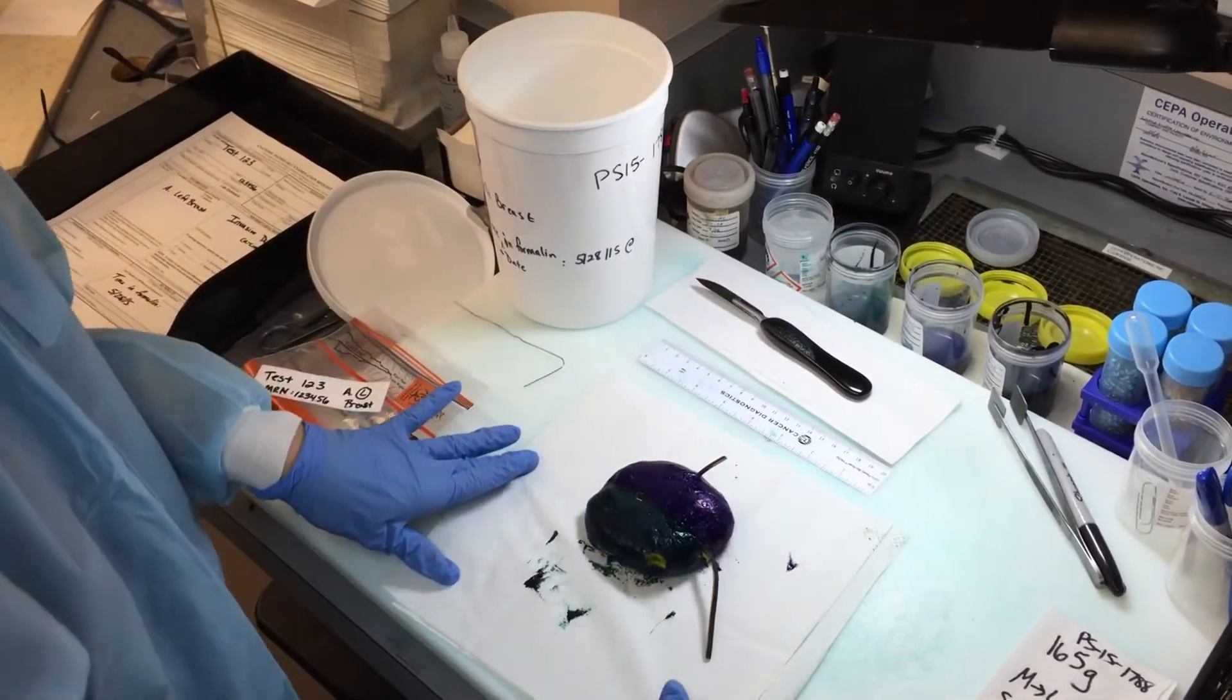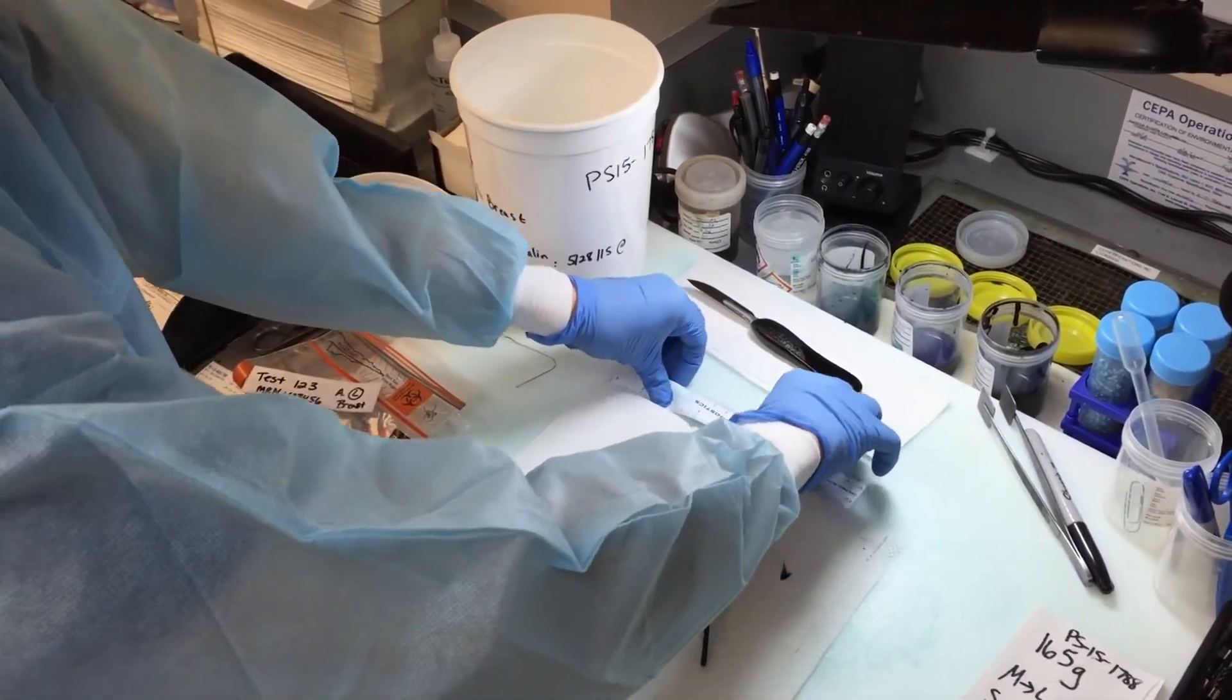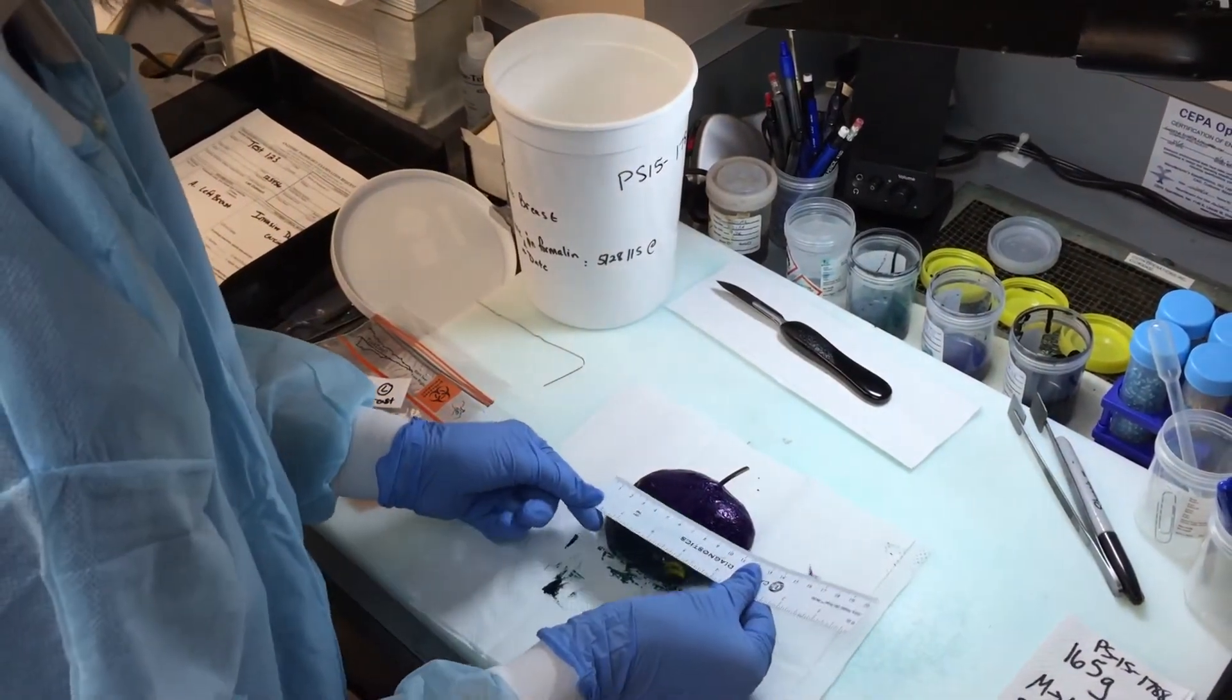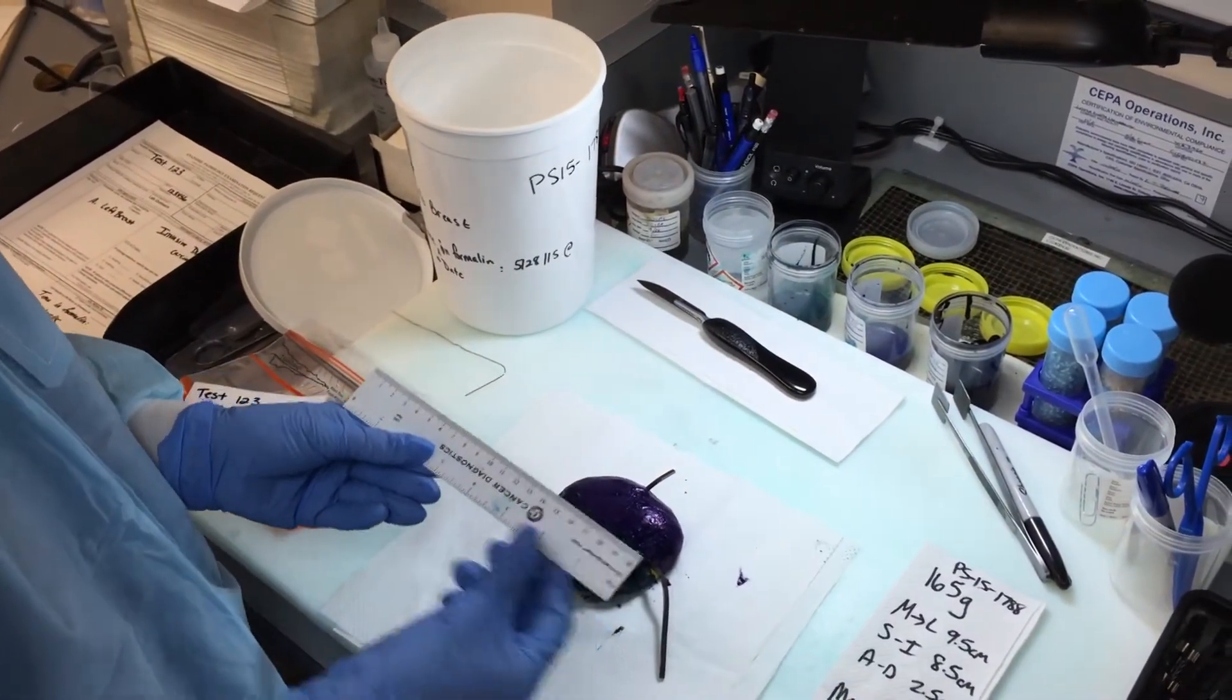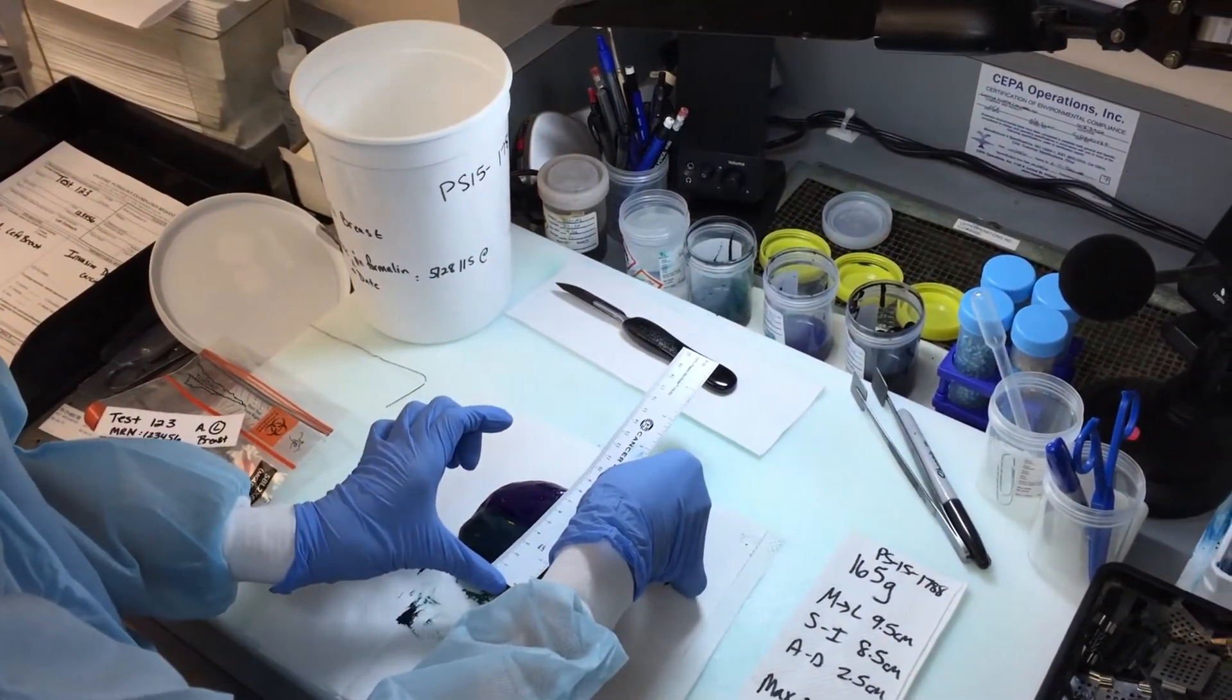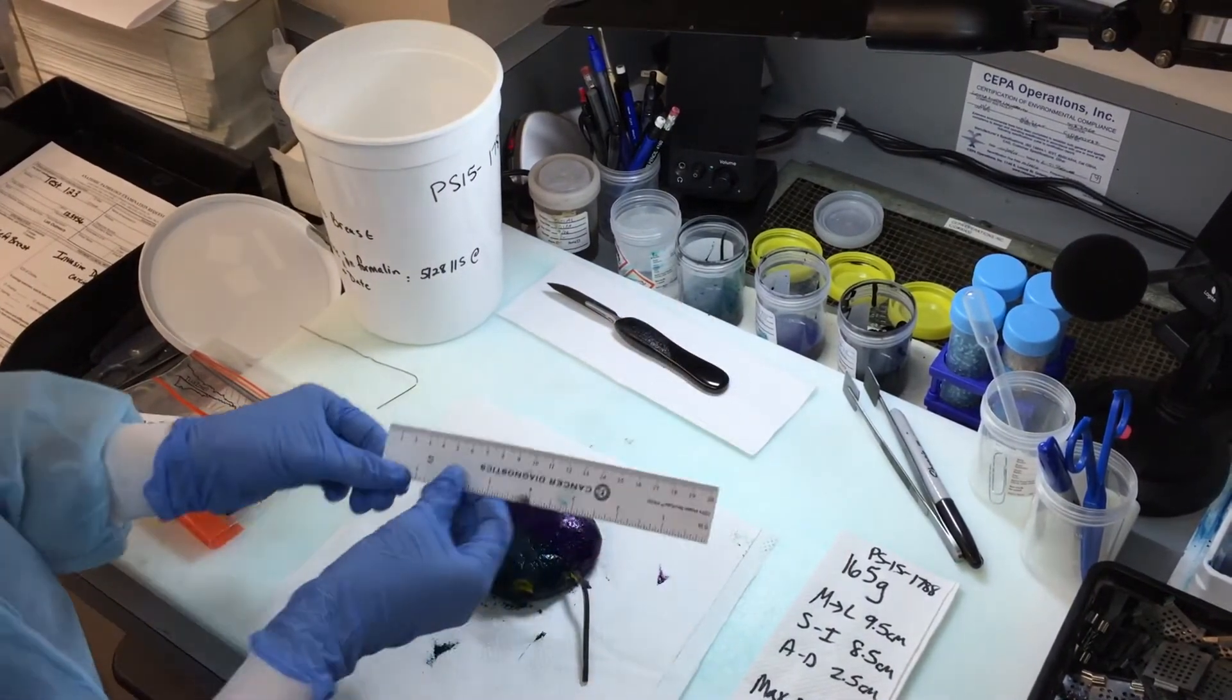And the next thing you want to do is measure the breast tissue. So you always want to measure the longest axis first. So we can see here that the medial to lateral axis is longest. So when we measure that, we measure it at 8.5 centimeters. And on the same paper towel, I keep the notes for dictation tomorrow. The superior to inferior is going to be 8.5, and anterior to deep is going to be 2.5 centimeters.